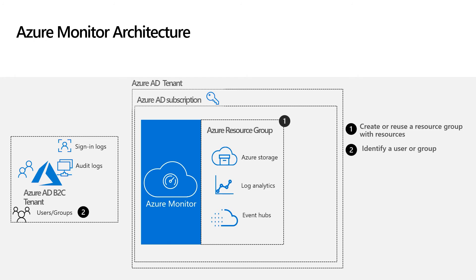Next, identify the Azure AD B2C tenant which is going to provide logs to Azure Monitor. Now, within this tenant, you either create or reuse a user group or a user. This user group or user will be assigned a contributor level permission on the resource group containing the Azure Monitor resources. To make the management easier, we recommend using a group, as this allows you to add or remove individual users to the group rather than assigning permissions directly to individual users.